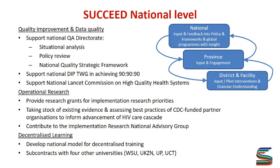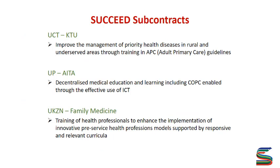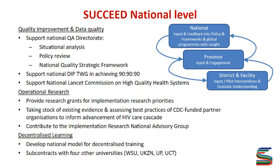At national level, we have quite a number of activities. For example, our QI team gives support at the national QA directorate. They also support the national DIP in achieving the 90-90-90 targets. Our operational research team contributes to the implementation of the research national advisory group. And the decentralized learning activity has already developed a model — Prof will talk more about that in terms of decentralized training.